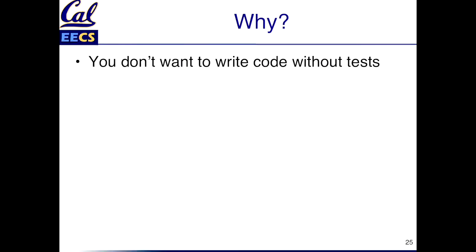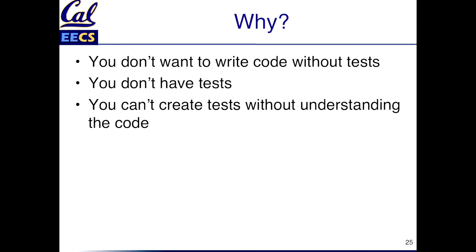The motivation here is we already said you don't want to write code without having test coverage, because then you're not going to know if you broke stuff. But if you don't have tests, and you can't write those tests if you don't understand what the code does — that's what a test is, it confirms your understanding of the design intent of the code. So how do you sort of get out of this infinite loop? How do you bootstrap yourself into a situation where you can start modifying code from a tested state? This is the problem that characterization tests solve.